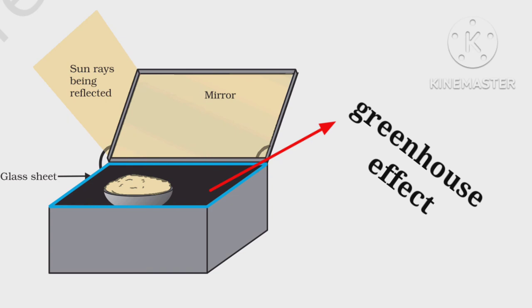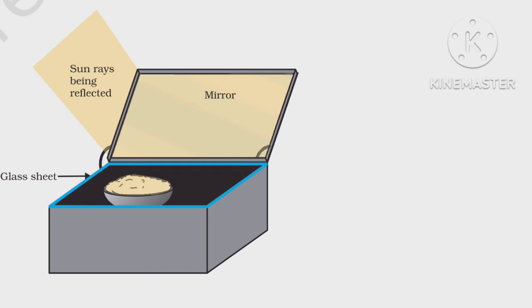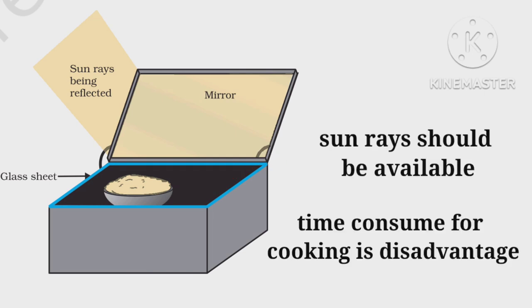Solar cookers are covered with a glass plate to create the greenhouse effect. The sun's rays that cross over the glass sheet can't escape out, thus inside temperature increases. Availability of sun rays is necessary, and time consumed for cooking is high as a disadvantage.